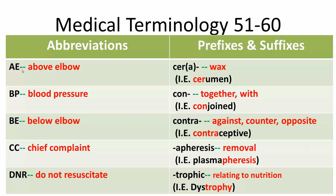First abbreviation: AE — Above Elbow. BP — Blood Pressure. BE — Below Elbow.